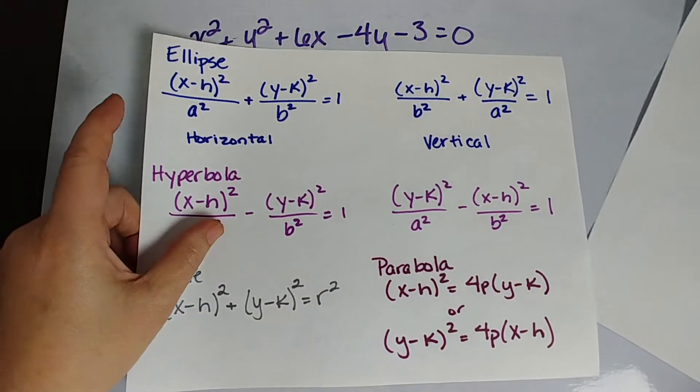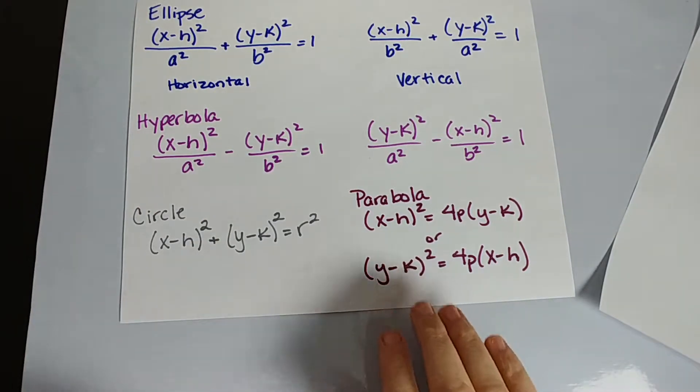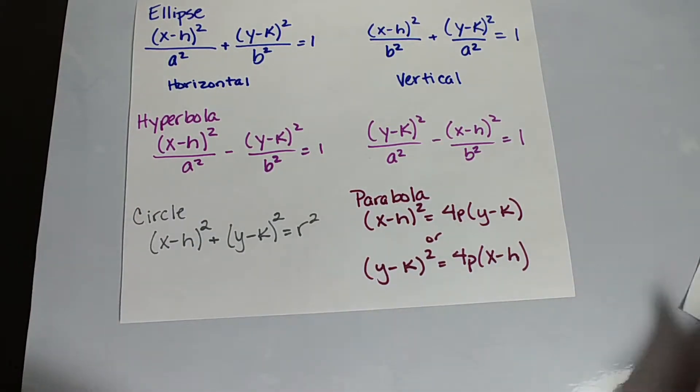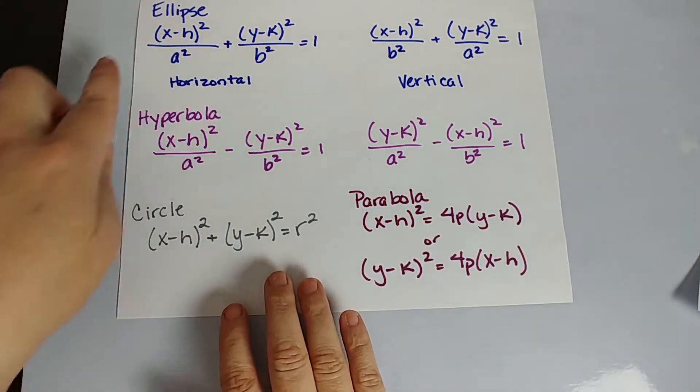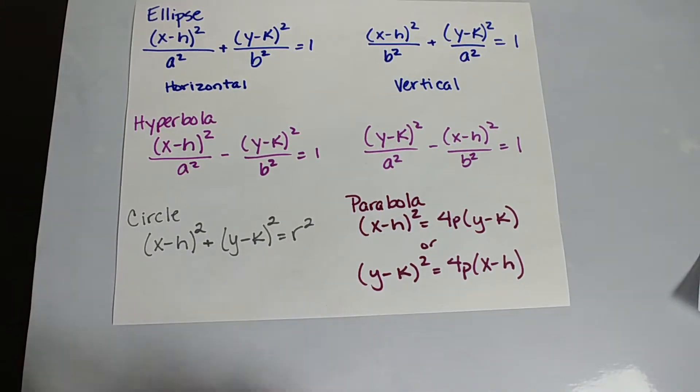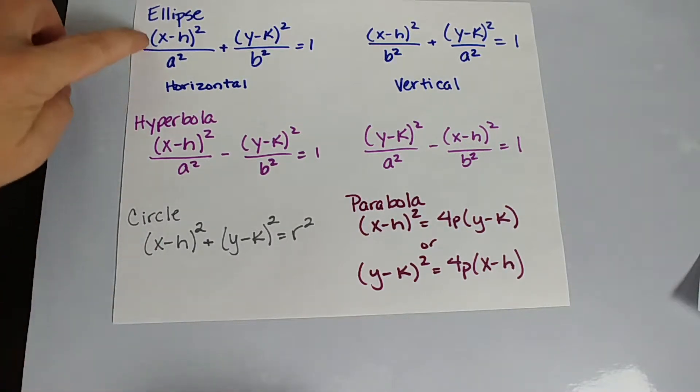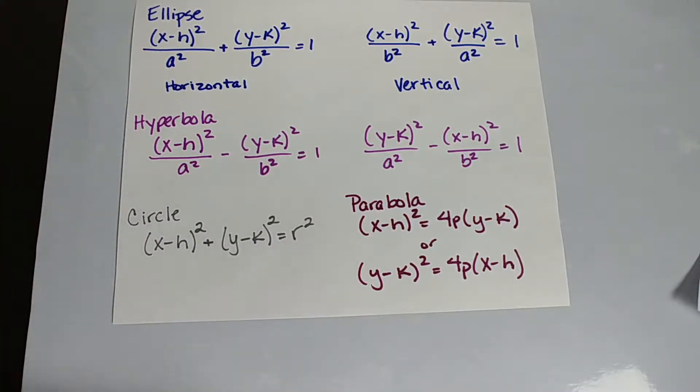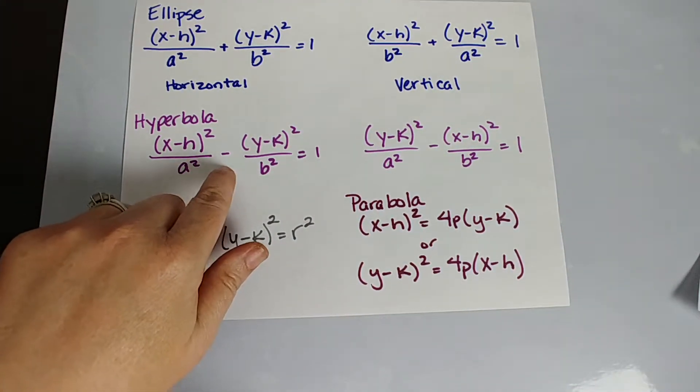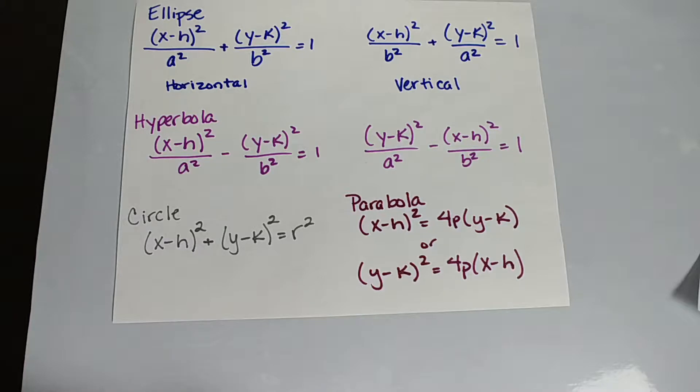These are the different formulas for all the different conic sections. We have an ellipse, and if it's horizontal, it's x squared minus h squared over a squared. Remember, a squared is your larger number, so when the larger number is under the x, it's horizontal. Then we flip it for vertical. Then we've got a hyperbola. Remember, those are hyperextended parabolas, so you're subtracting the two.